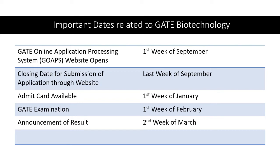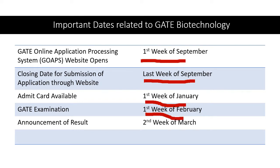Here are some important dates related to GATE Biotechnology paper. The application form for GATE gets available on the portal from the first week of September. Candidates can get themselves registered through GOAPS before the final date, that is the last week of September. Registered candidates will be able to access their admit card from the first week of January. The exam is usually scheduled in the first week of February, and the results are announced by the second week of March.